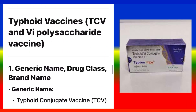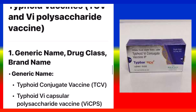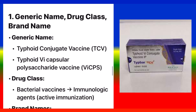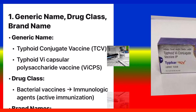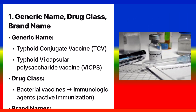Typhoid Vaccines: TCV and Vipolysaccharide Vaccine. Generic name: Typhoid Conjugate Vaccine (TCV) and Typhoid Vi-capsular Polysaccharide Vaccine (VICPS). Drug class: Bacterial Vaccines, Immunologic Agents, Active Immunization.